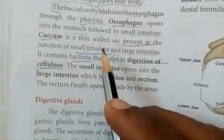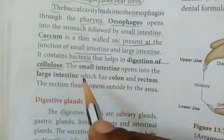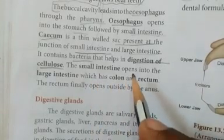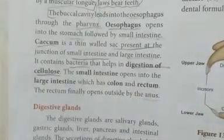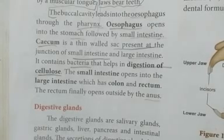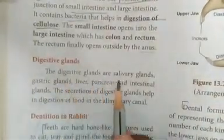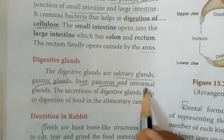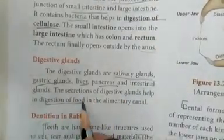The small intestine opens into the large intestine, which has the colon and rectum. The rectum finally opens outside through the anus. Next are the digestive glands: salivary glands, gastric glands, liver, pancreas, and intestinal glands.